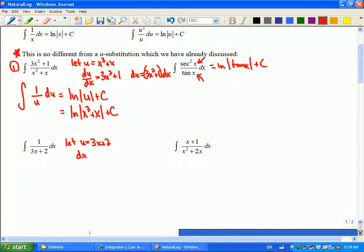So du dx would be 3. So du is 3 dx's, which means if I multiply in here by 3, how do I balance it out? I need a 1 over 3 outside. So now, if you look, the top is a derivative,